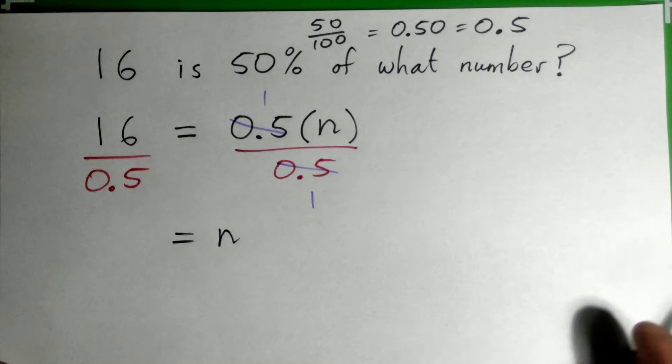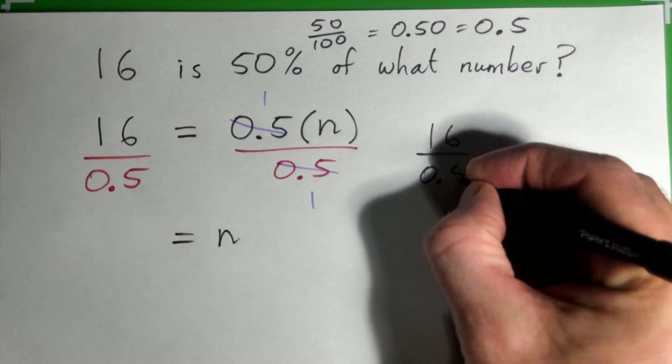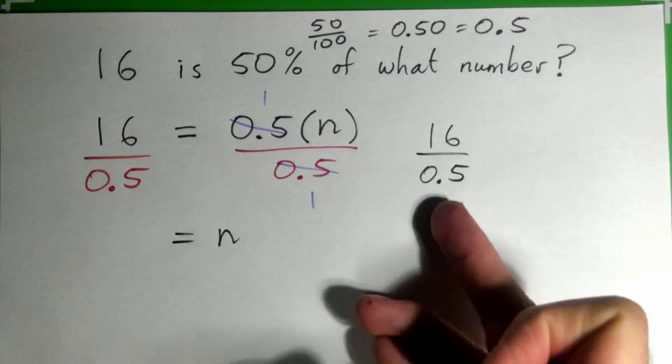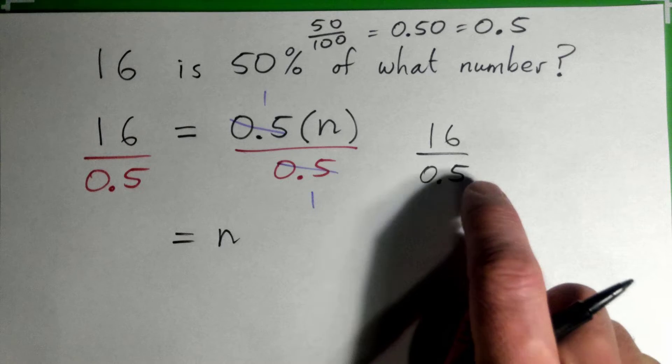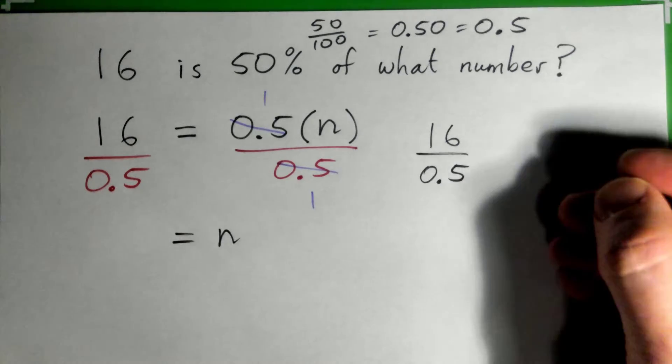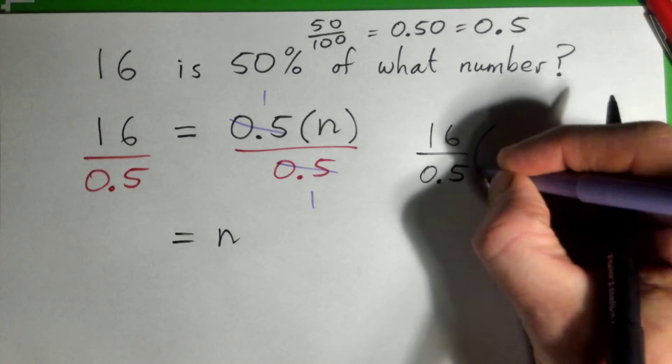I'm going to do it over here and we'll take our time. 16 over 0.5. We can't divide by decimals in math, we need to turn the denominator into a whole number. So what would I multiply 0.5 by in order to turn it into a whole number?